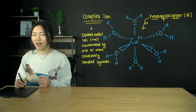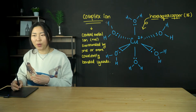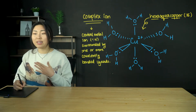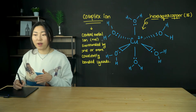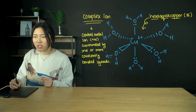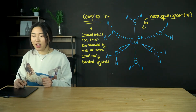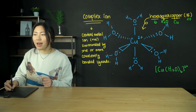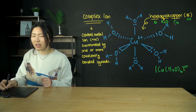Next, we look at the concept of complex ions that transition elements form. A complex ion is a central metal ion that is positive, surrounded by one or more covalently bonded ligands. In this example, we have hexa-aqua-copper. 'Hexa' stands for 6, 'aqua' stands for water, and 'copper' is the central metal ion, Cu2+.